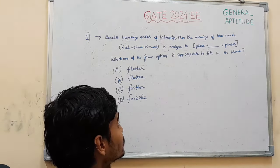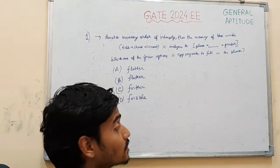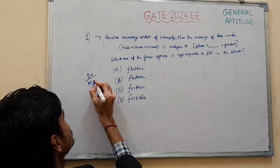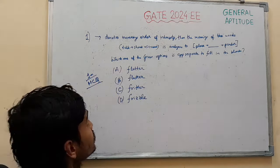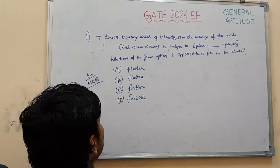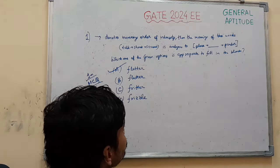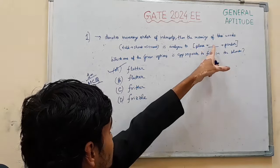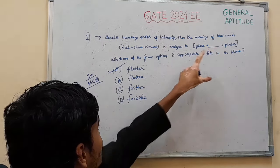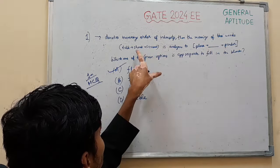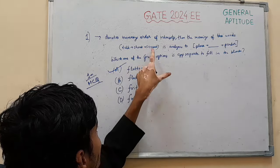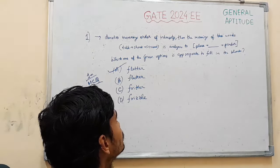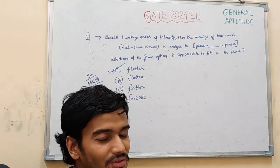As I explained, the right answer of this question — MCQ, one mark — is Flattery. Flattery comes in between please and pander, just as shout comes between talk and scream, in increasing order of intensity. So that is the basic explanation of this question.